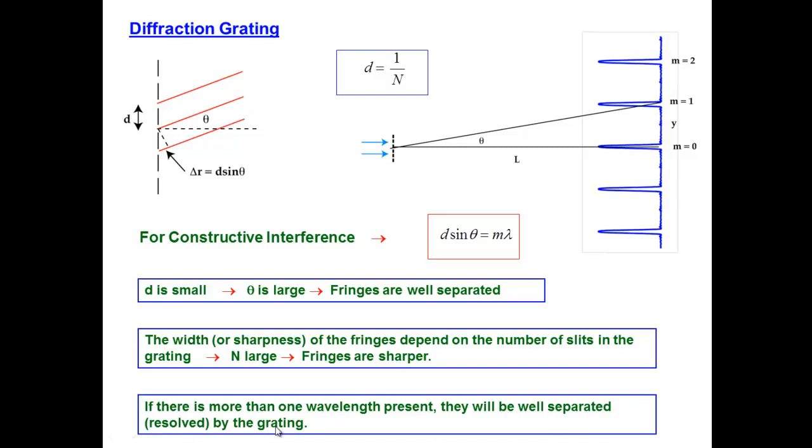So that's what a diffraction grating is in practice most useful for. Taking a source of light that has more than one wavelength, maybe many different wavelengths, letting those wavelengths then pass through the grating and appear on the screen at different locations. And so we can take the light that's initially mixed up and all coming from the same source and separate it out into different wavelengths.